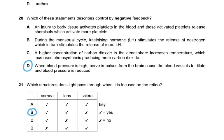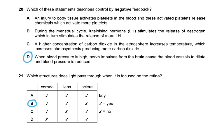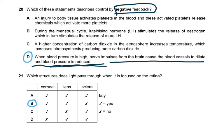Question 20: Which of these statements describe control by negative feedback? This is coming in the previous variant as well. When blood pressure is high, nerve impulses cause the blood vessels to dilate and blood pressure is reduced.